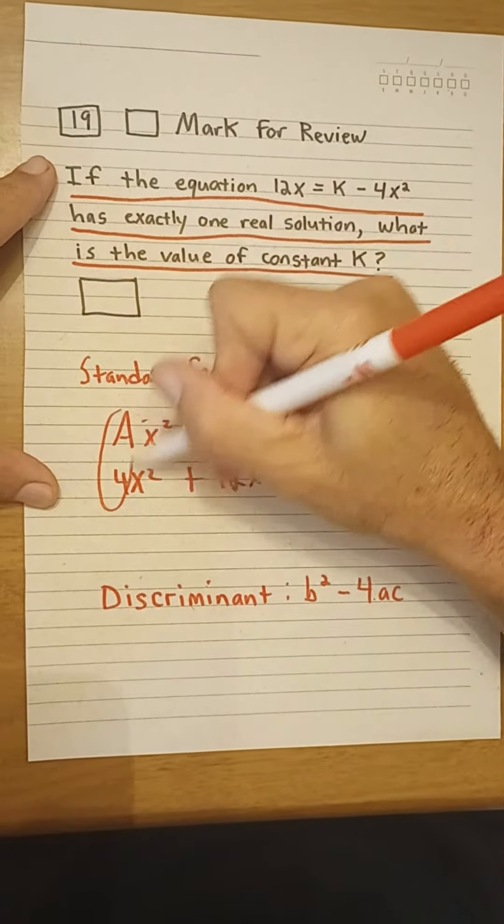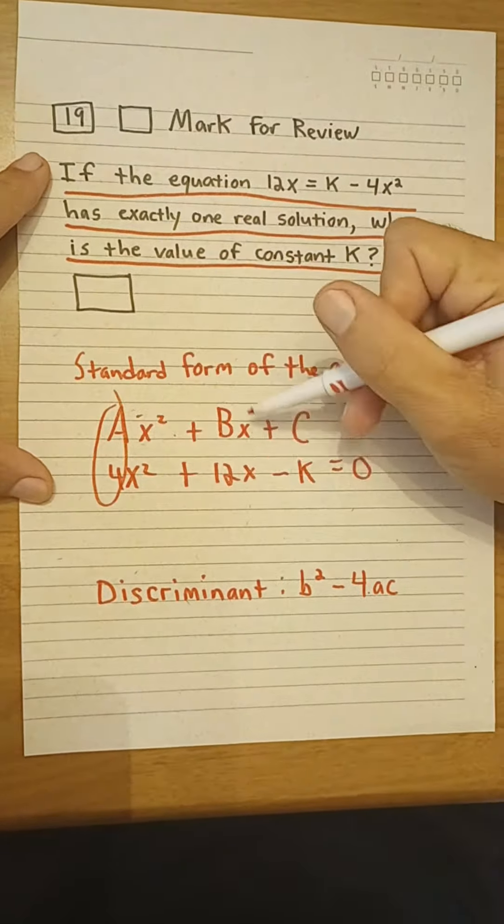So our a is 4, our b is 12, and our c is negative k.